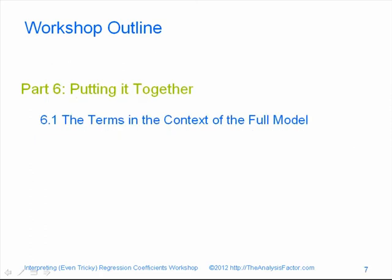Finally, in our very last module, we're going to spend the entire time talking about a full model — what happens when you put everything together into a single model. How does including various terms like interactions, polynomials, or dummy variables affect interpretation of the other terms? Whether you have standardized coefficients or centered variables, we'll look at everything together, because this is what you usually have when you're actually analyzing your data.